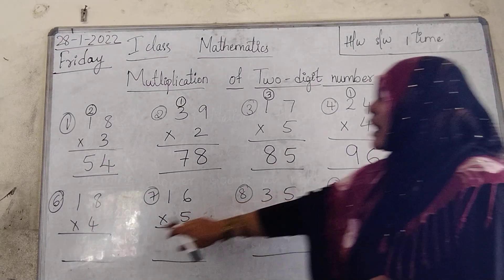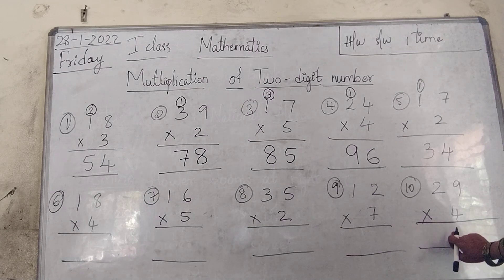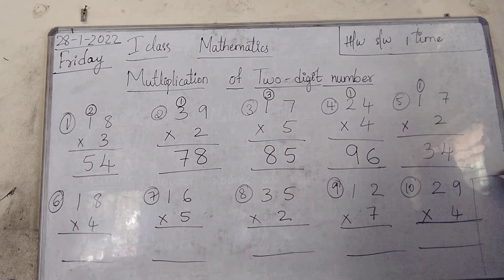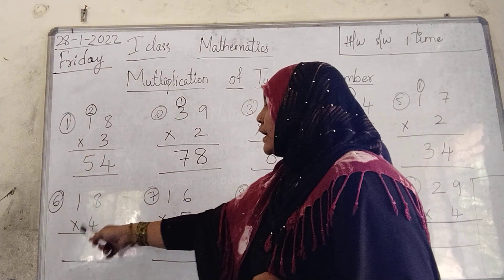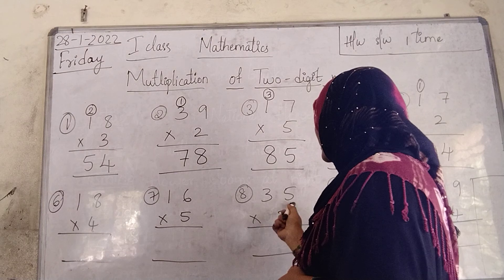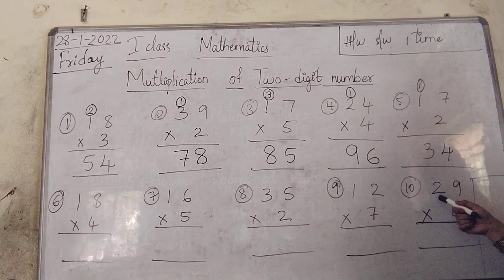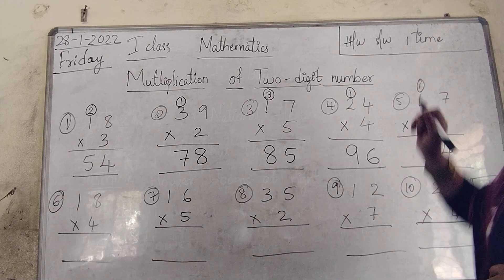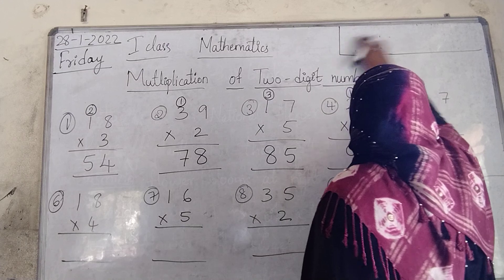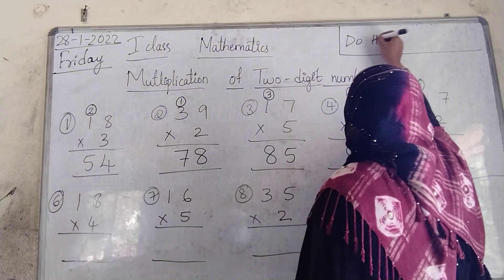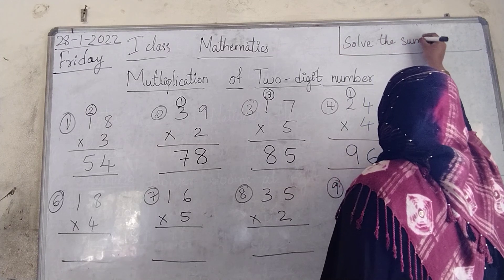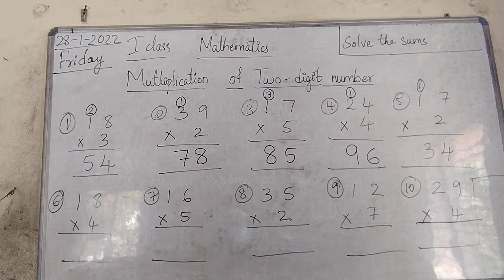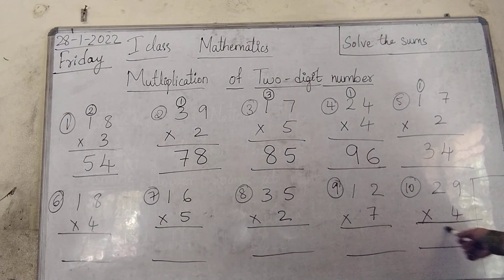All of you understood? Now you have to write the other 5 sums on your own. First write the tables in the margin, then solve these 5 sums: 18 into 4, 16 into 5, 35 into 2, 12 into 7, and 29 into 4. Write correctly and show me in your notebooks. Solve the sums.